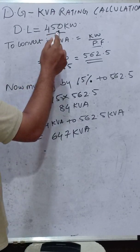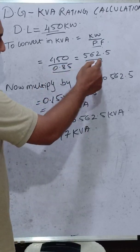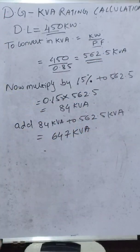The kW in our case is 450 kW. Power factor we have considered is 0.85. So, the demand kVA comes out to be 562.5 kVA.